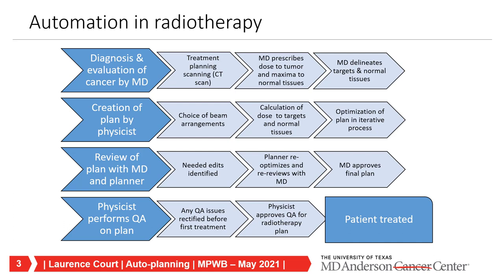Once contouring is ready, it's passed to the treatment planner—a physicist, dosimetrist, or other clinical team member. They decide on beam arrangements, calculate doses, and optimize the plan. They then go back to the physician. There's iteration because of clinical compromises related to doses to normal tissues and targets. Eventually the physician approves a plan, which goes back to the clinical team for quality assurance, peer review, and ultimately treatment. It's a large and complex process with many steps.